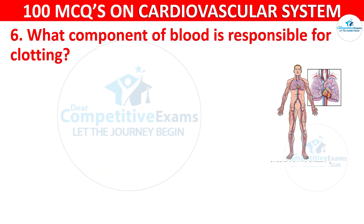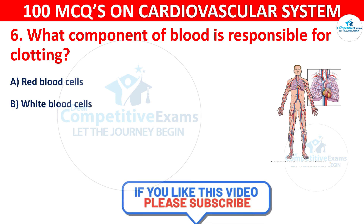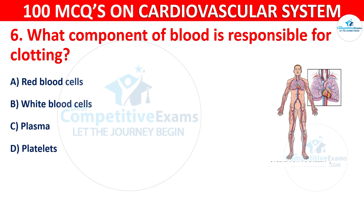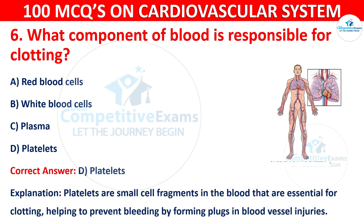Q6. What component of blood is responsible for clotting? Options are: red blood cells, white blood cells, plasma, or platelets. The correct answer is D — platelets. Platelets are small cell fragments in the blood that are essential for clotting, helping to prevent bleeding by forming plugs at blood vessel injuries.